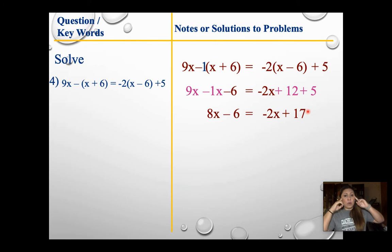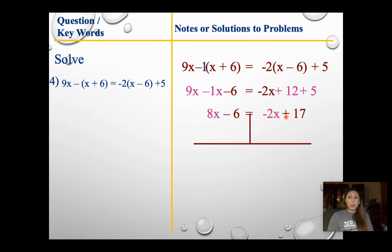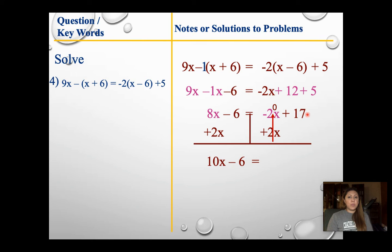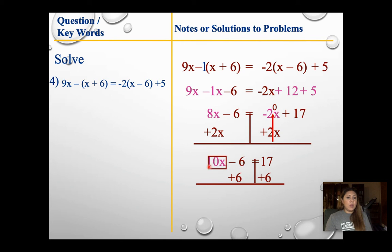From here I look at my variables and see which side has the smaller one. I have 8x and negative 2x, so I want to move the negative 2x over to the other side. Instead of subtracting 2x, I'm going to add 2x to both sides. 8 plus 2 gives me 10x, subtract by 6, equals negative 2x plus 2x gives me 0 — bring down my 17. From here, I add 6 to both sides. 10x comes down, the 6's go away, and 17 plus 6 gives me 23.